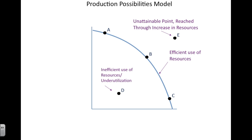So the production possibility model — the PPF or PPC — represents the tradeoff between two goods, and points can fall along the curve, inside the curve, or outside the curve.